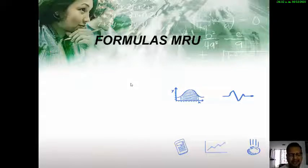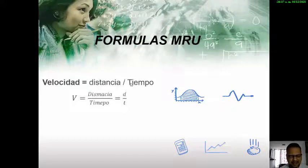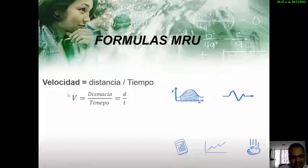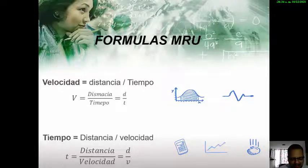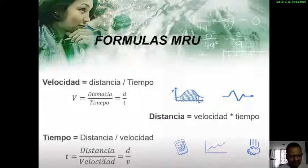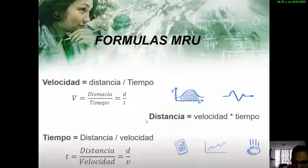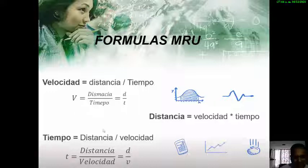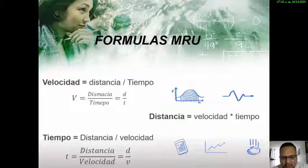Para el movimiento rectilíneo uniforme vamos a trabajar tres fórmulas sencillas: la velocidad, que es igual a la distancia dividida entre el tiempo; el tiempo, que es igual a la distancia dividida entre la velocidad; y la distancia, que es igual a la velocidad multiplicada por el tiempo. Dependiendo de lo que pida el ejercicio, usamos la fórmula correspondiente: si pide calcular la velocidad, usamos esa fórmula; si pide la distancia, usamos la de distancia; y si pide el tiempo, usamos la del tiempo.